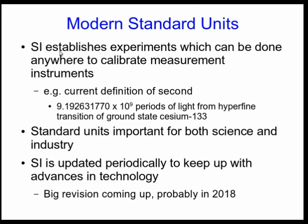Well, we don't do it that way anymore. The main purpose of SI is that it establishes the experiments which can be done to calibrate measurement instruments. So, for example, there's our current definition of the second—it's to do with a particular transition in cesium-133, and you just count periods. That's a lot of periods, right? So you need very precise instruments to do this, and the thing you use is what's called an atomic clock.